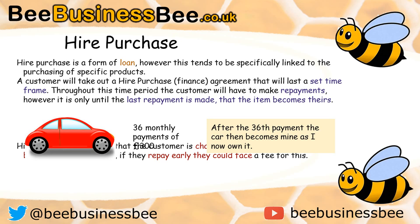Another form of borrowing is hire purchase. Think of hire purchase as a form of loan that allows you to purchase an item at the end of a specified period. It's typically used in the car industry — when buying a car you may hear it referred to as finance, which is a form of hire purchase. The customer takes out a hire purchase agreement that lasts a set time frame, making agreed repayments throughout. It's only after the last repayment that the item actually becomes theirs. For example, if a customer makes 36 monthly payments, it's only after the 36th payment that the car becomes theirs.